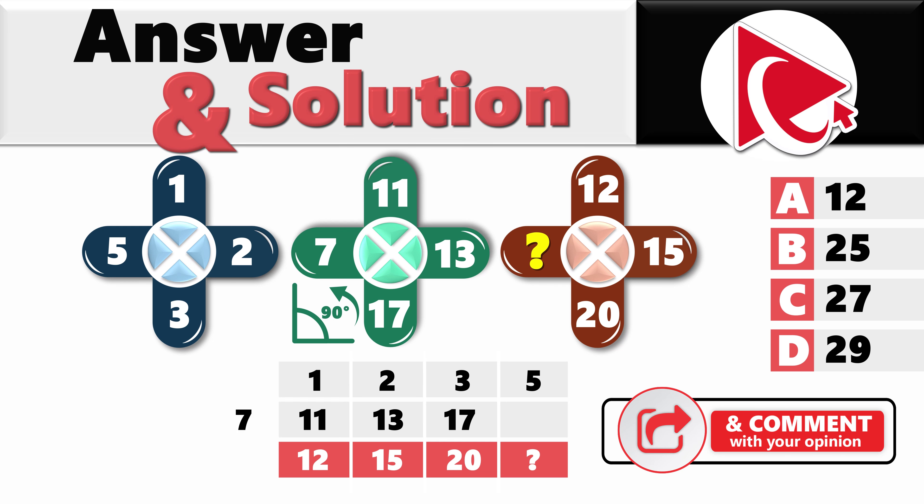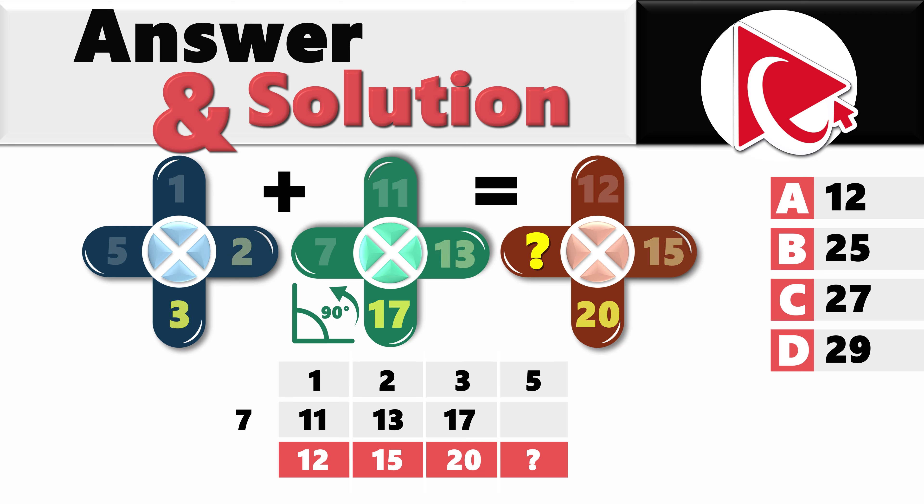For example: 1 plus 11 equals 12, 2 plus 13 equals 15, 3 plus 17 equals 20, which means that 5 plus 7 equals 12. So the correct answer here is choice A, 12.